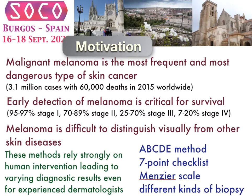Early detection is critical for survival. If you take a look at the survival rate for different stages, starting at stage 1, which is between 95 to 97 percent, it is as low as 7 to 20 percent survival for stage 4. So early detection is very important in order to survive from this disease.